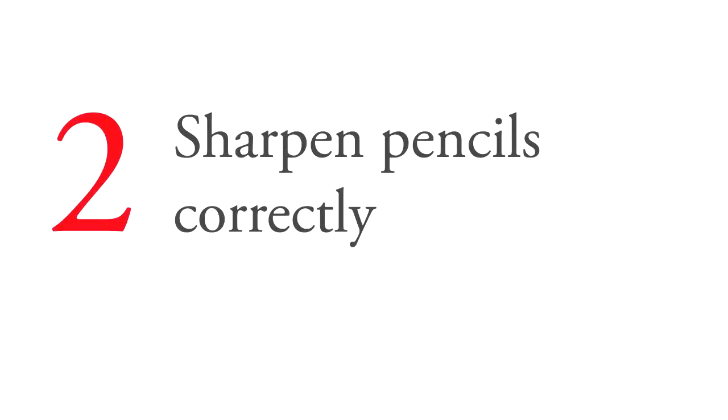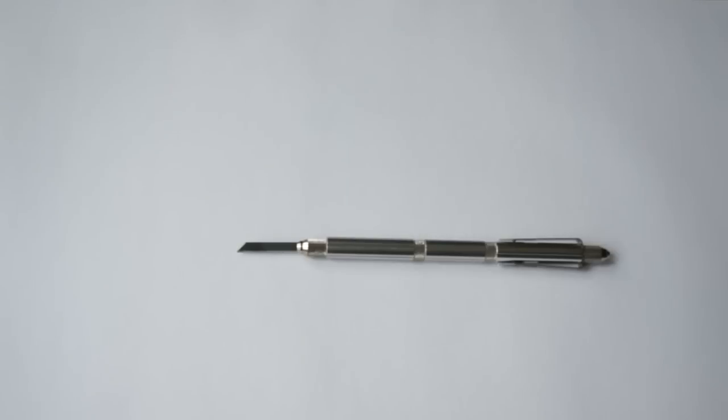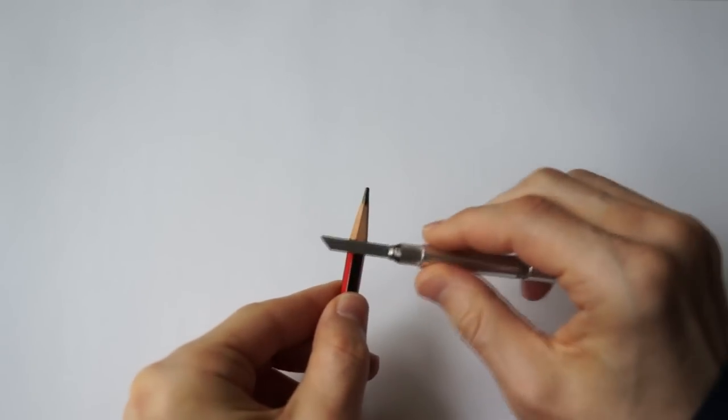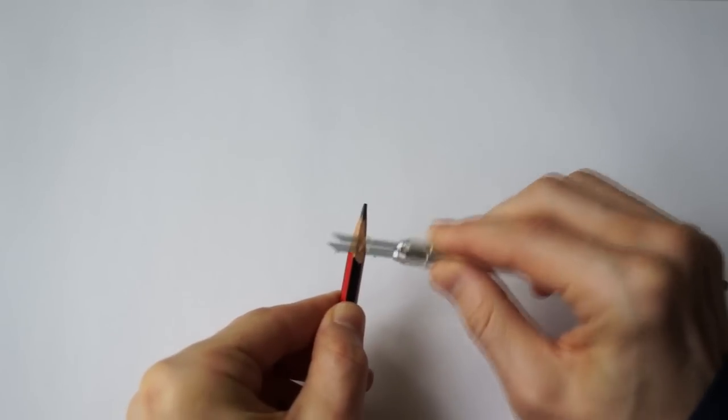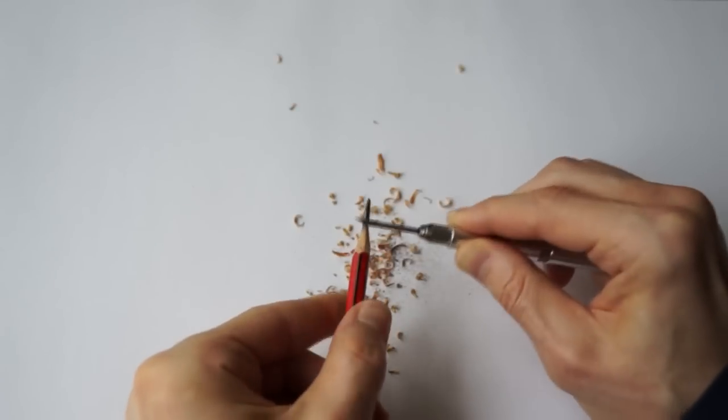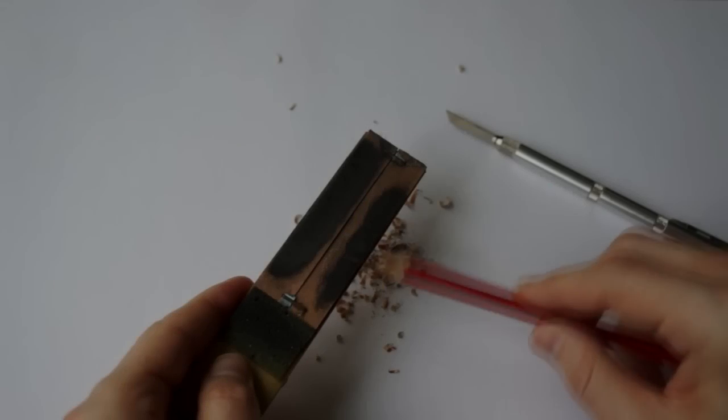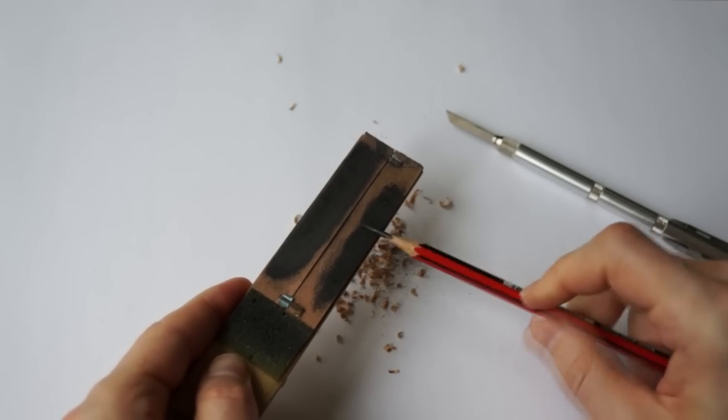Number two, sharpen pencils correctly. The first step in using a pencil is sharpening it. Buy a good pencil knife. Don't trust art instructors who advise you to sharpen pencils with a sharpener. It is only good for children and only for safety reasons. A well-sharpened pencil needs to have about 1 centimeter, 0.4 inches, of lead exposed. You may sharpen exposed graphite with fine sandpaper.